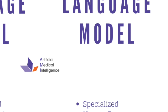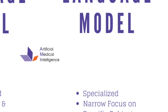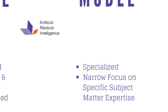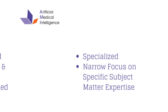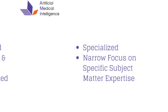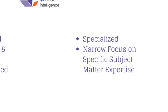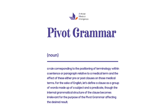That's one piece. Our ontology is a repository of medical terminology, and how it all comes together is what makes our model unique. With our ontologies, we need to understand grammar, and we have a unique proprietary way of describing this process, which we refer to as pivot grammars. We define a pivot grammar as a rule corresponding to the positioning of terminology within a sentence or paragraph relative to a medical term.